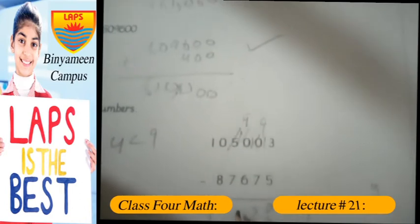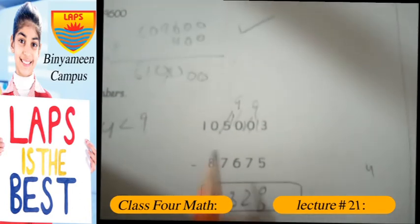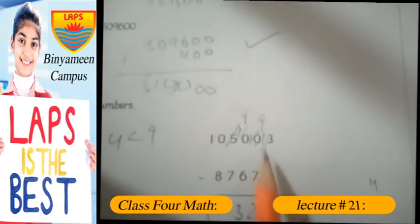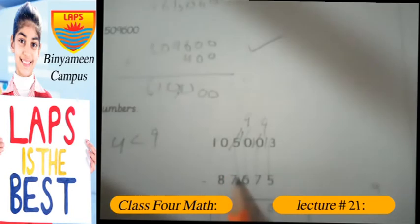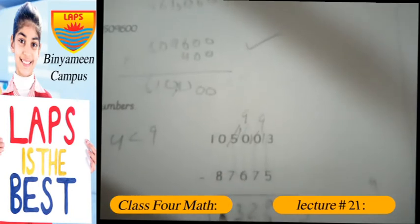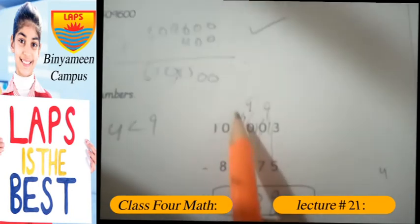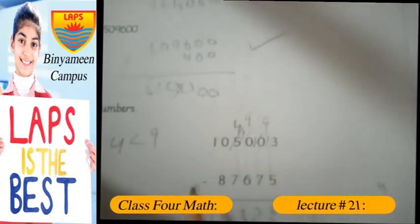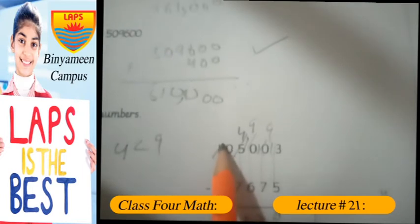We can still... actually yes, since we need to carry. 5 becomes 4. Then we can't carry from 0, but we can carry from 5. So we have to carry, 0 becomes 10. We can carry from here, and this will be 9.